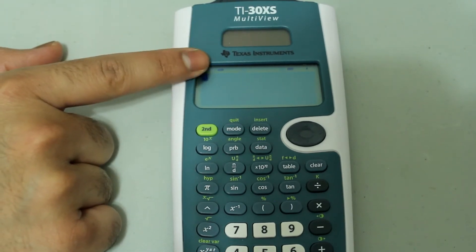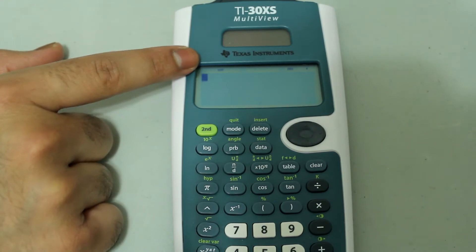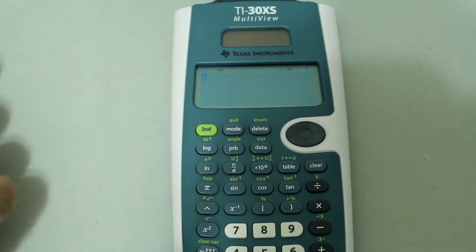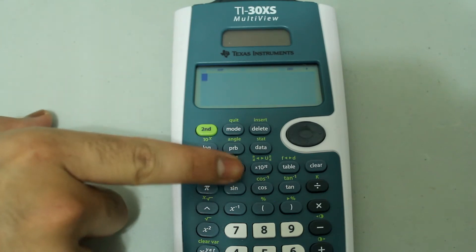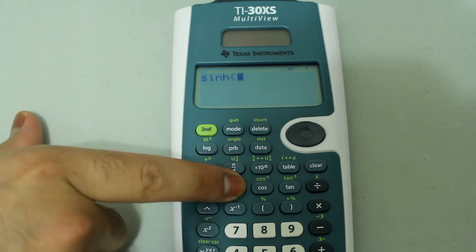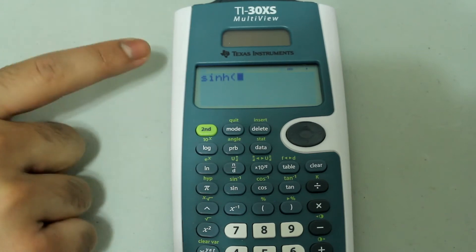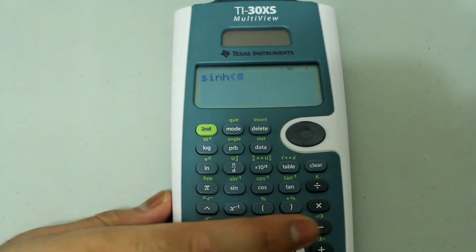notice that a little HYP appears on the upper left corner of the screen. So now the hyperbolic mode is turned on and if I press sine I get sinh. I'm going to type in natural log of 2 now.